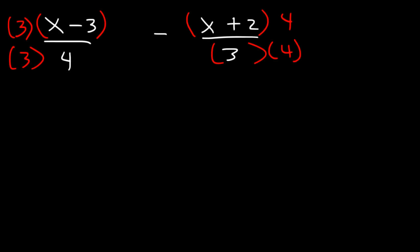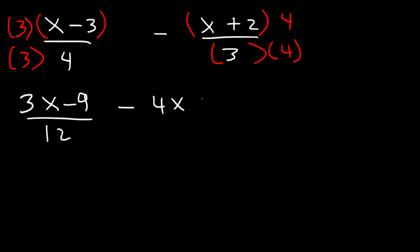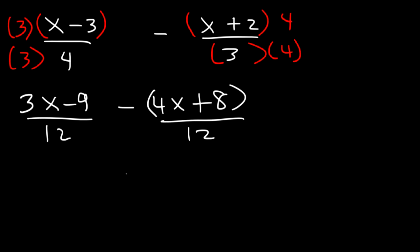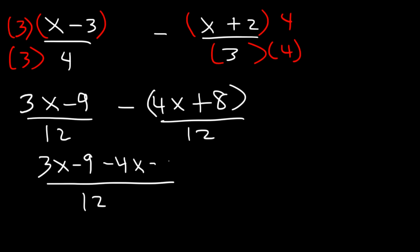Let's distribute 3 to x minus 3: that gives 3x minus 9, and 3 times 4 is 12. Now let's distribute 4 to x plus 2: that's 4x plus 8. Keep in mind this negative sign needs to be distributed. Writing it as a single fraction, we have 3x minus 9, and distributing the negative sign gives negative 4x minus 8.